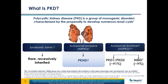Syndromic forms are another kind of polycystic kidney disease. These are rare and are autosomal recessive also. There are conditions like Bardet-Biedl syndrome, nephronophthisis, and Joubert syndrome. And then there's ARPKD, which is what we're going to talk about today, which is due to mutations in a gene found on chromosome 6 called PKHD1.